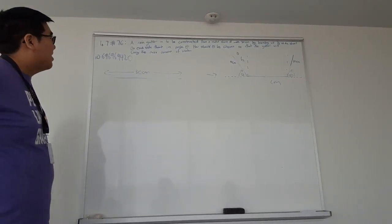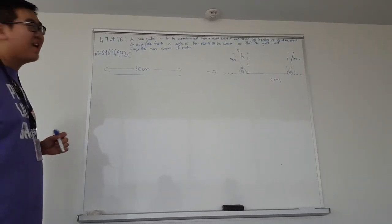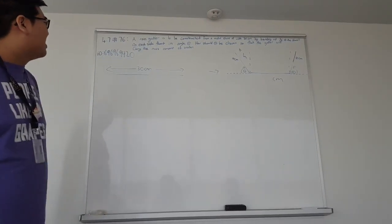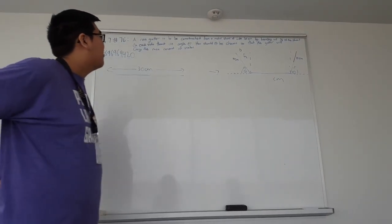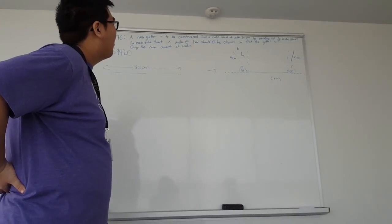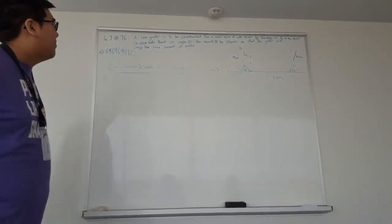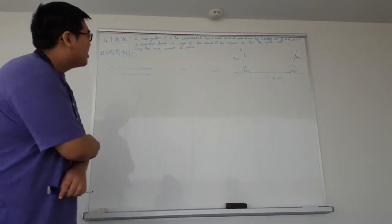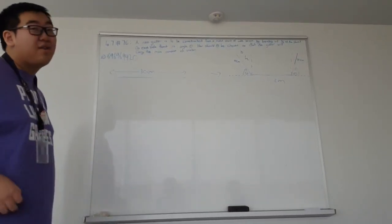Anyways, I'm not sure if you can read that tiny writing, but it says a rain gutter is to be constructed from a metal sheet of width 30 centimeters by bending up one-third of the sheet on each side through an angle theta. How should theta be chosen so that the gutter will carry the max amount of water?